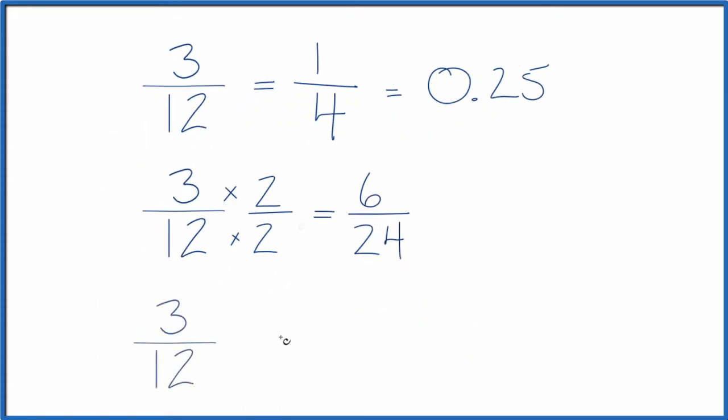Let's do one more. Let's multiply 3 twelfths by 3 over 3. 3 over 3, that's equivalent to 1, so we don't change the value, just the way it's represented. And 9 over 36 is another equivalent fraction to 3 twelfths.